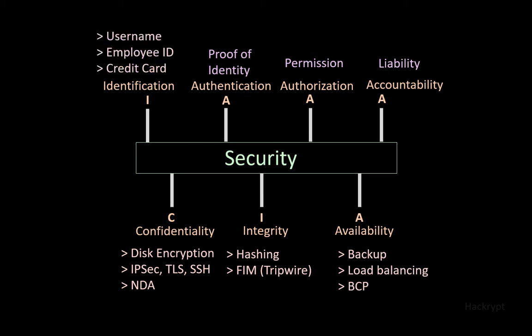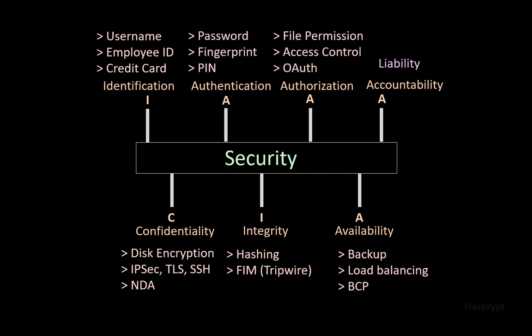Examples of identification are username, employee ID, and credit card. We can prove these by using password, fingerprint, or PIN number. Authorization can be achieved by using file permissions, access control, and protocols like OAuth, which is used to log in to a site using a social network or Gmail account. Accountability can be achieved by using logging and auditing, so that in the case of an event we can trace back to the source and find out who is responsible.